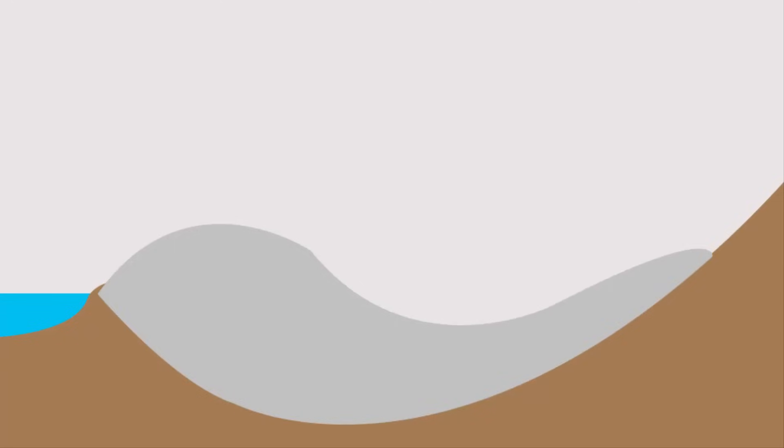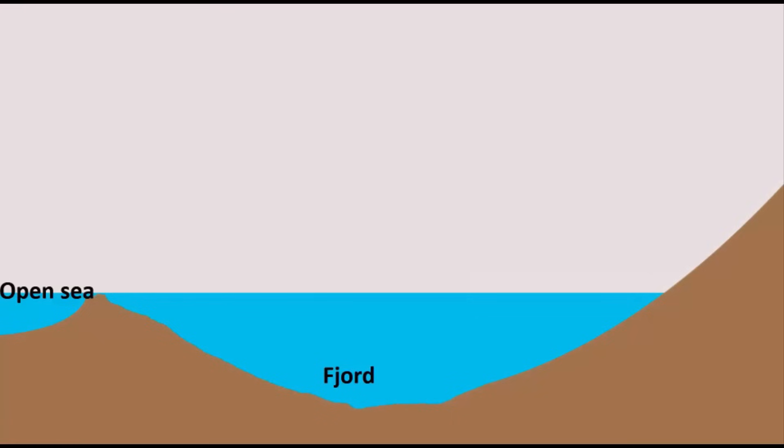So what happens is, when a glacier moves, the bottom layer of the glacier, which is also called the glacier bed, as it moves, it carves a valley and forms a land depression. Now, this land depression slowly gets filled up with water from open sea.